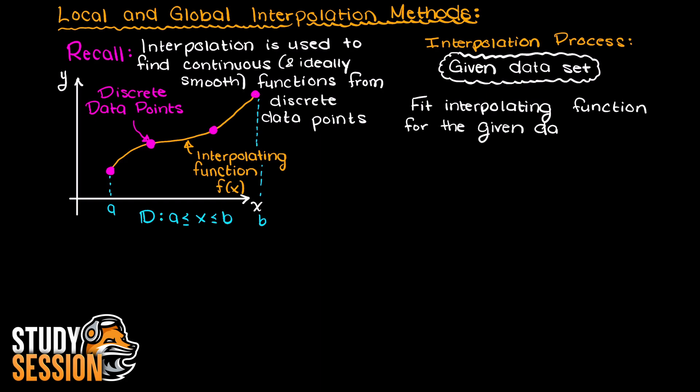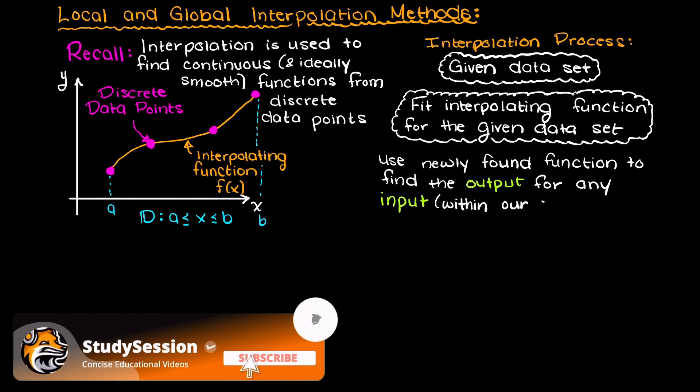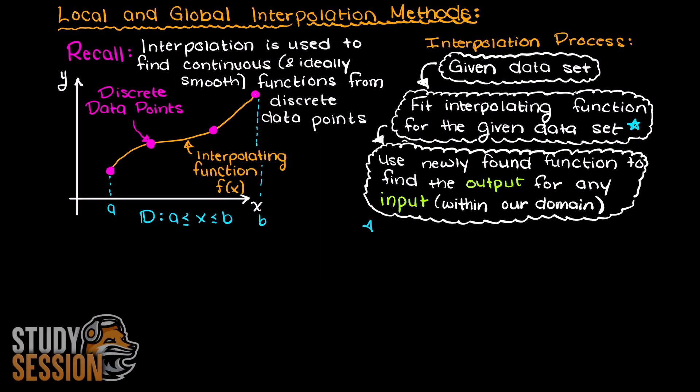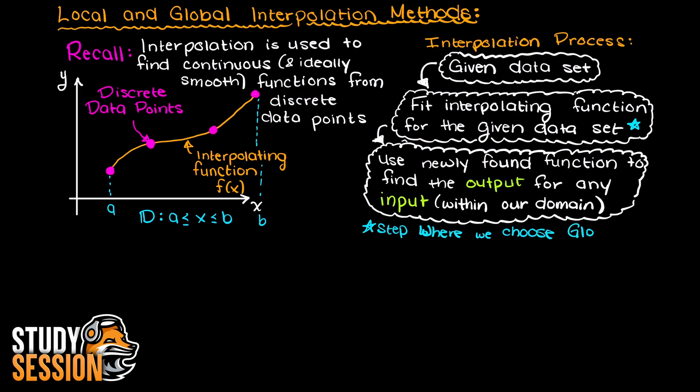So broadly, we can describe our interpolation process as: given some data, we fit an interpolating function given that it is both smooth and continuous, then assuming a good interpolation fit, we can plug any input within our bounds of our applied data set to find the output.